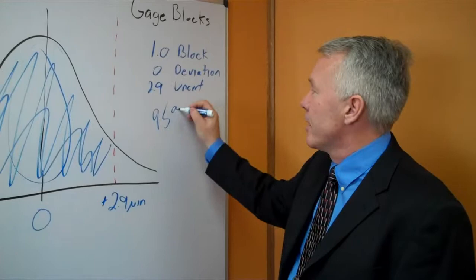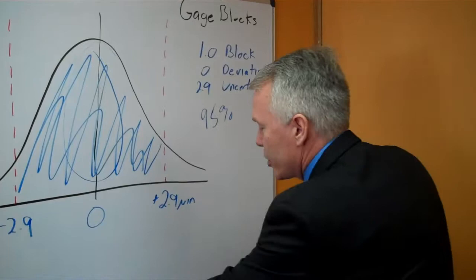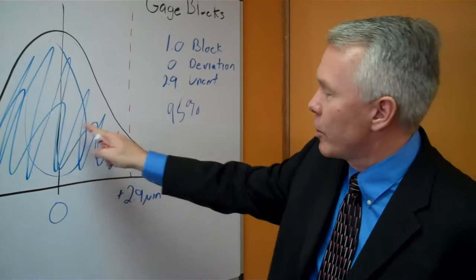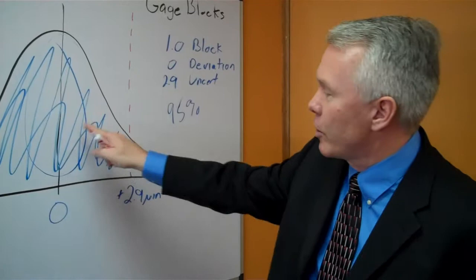And since that's done at a 95% confidence level, there is a 5% chance that it could fall in the outside regions of this area, a 2.5% chance it could be out there, and a 2.5% chance it could be out there. But the nice thing, there's a 95% probability it's going to be located closer around the zero deviation that we actually reported.